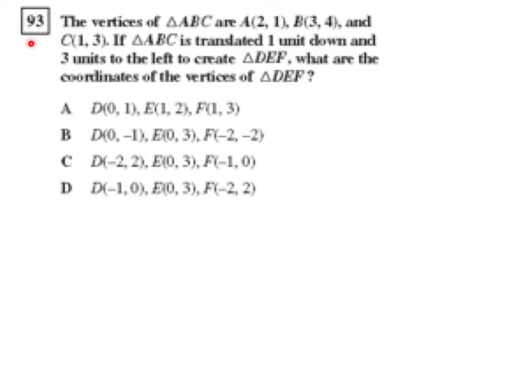Problem 93 from the Geometry CST release test questions. The vertices of triangle ABC are 2, 1 for point A, 3, 4 for point B, and 1, 3 for point C.